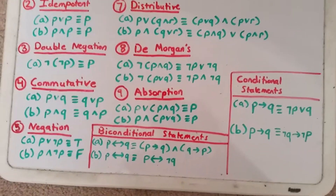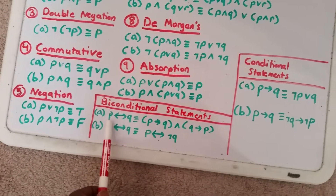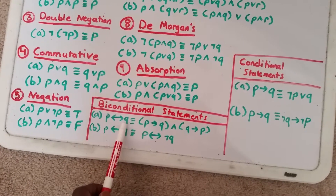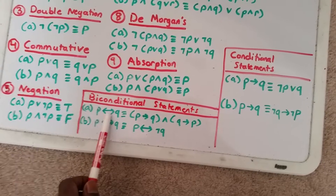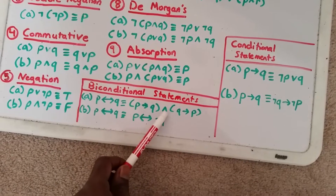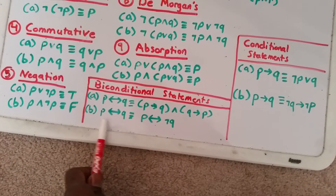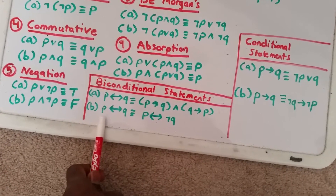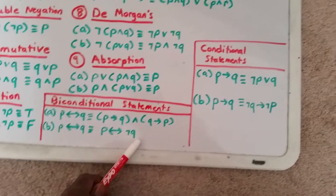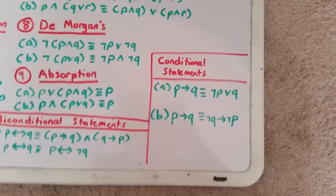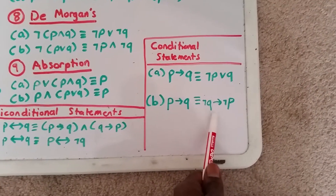We also have our biconditional and conditional statements. The biconditional P if and only if Q is really like saying P equals Q, and it's logically equivalent to (P implies Q) and (Q implies P). The biconditional P ↔ Q is also logically equivalent to not P ↔ not Q. Additionally, P implies Q is logically equivalent to not P or Q, and also logically equivalent to not Q implies not P.